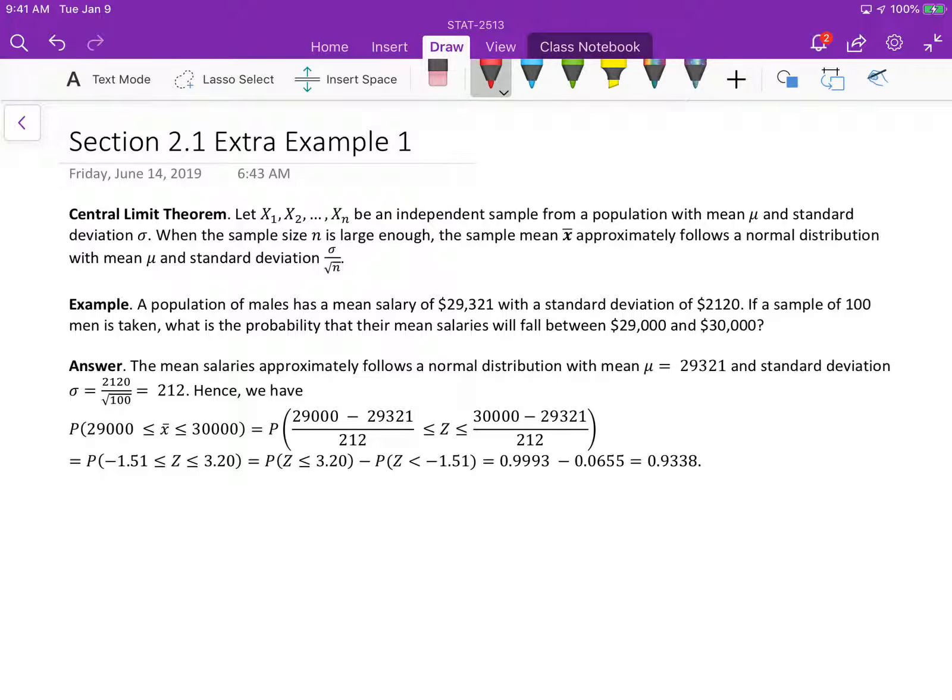Let's use the following example to demonstrate how to use these results. A population of males has a mean salary of $29,321 with a standard deviation of $2,120. If a sample of 100 men is taken, what is the probability that their mean salary will fall between these two numbers?